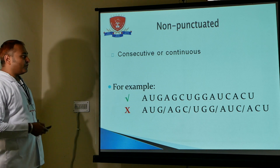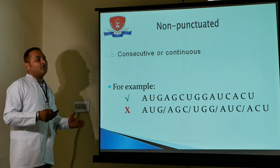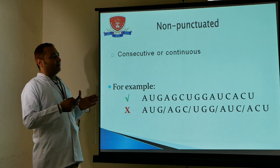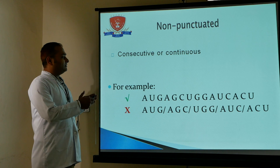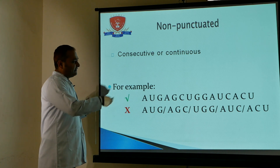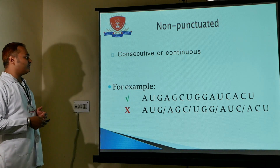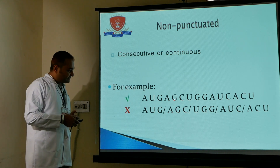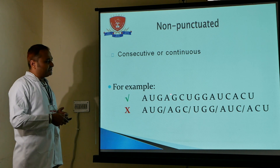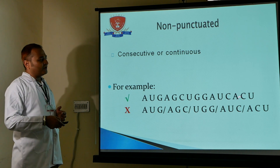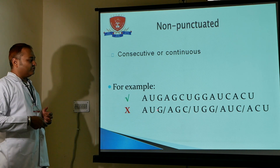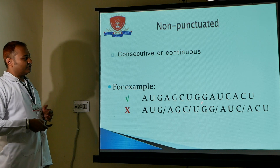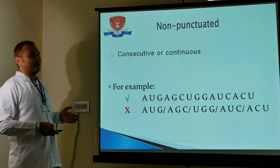Non-punctuate means there is no gap in any consecutive or continuous sequence. For example, AUGCA has no punctuation, no comma. A pattern like AUG-AGC with a dash is the wrong pattern — the code is read continuously without breaks.